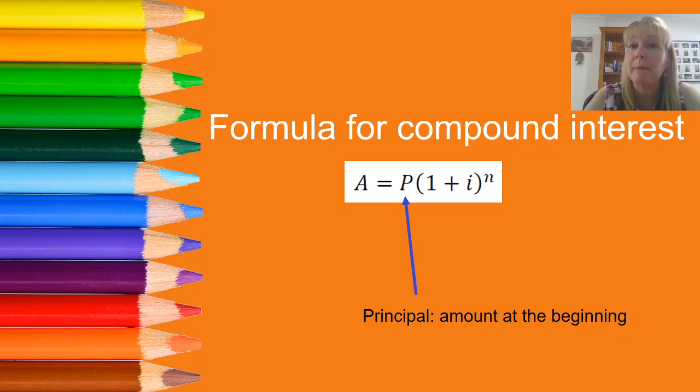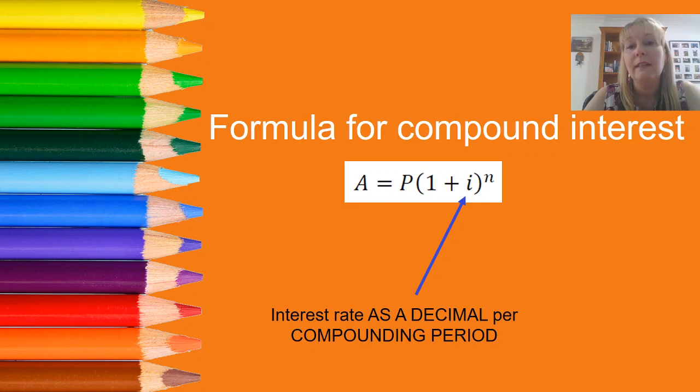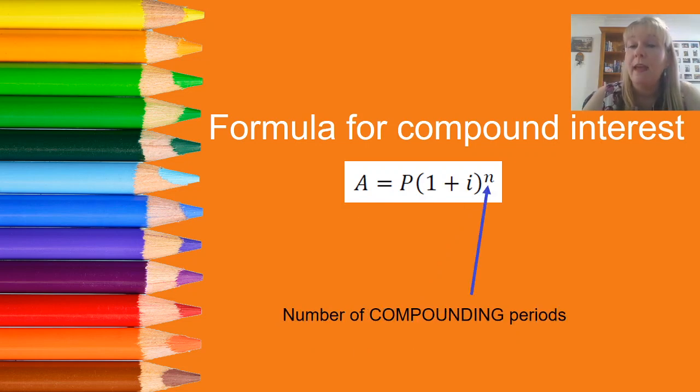Our P stands for the principal. It's not the person who runs the school. It's the amount at the beginning of the investment or loan. The little i represents the interest rate expressed as a decimal. So if you're given it as a percentage you need to divide that by 100 before you substitute it into the formula. And this is taken per compounding period. Now I'll explain that a little bit more shortly. Our power of n refers to the number of compounding periods that there are.